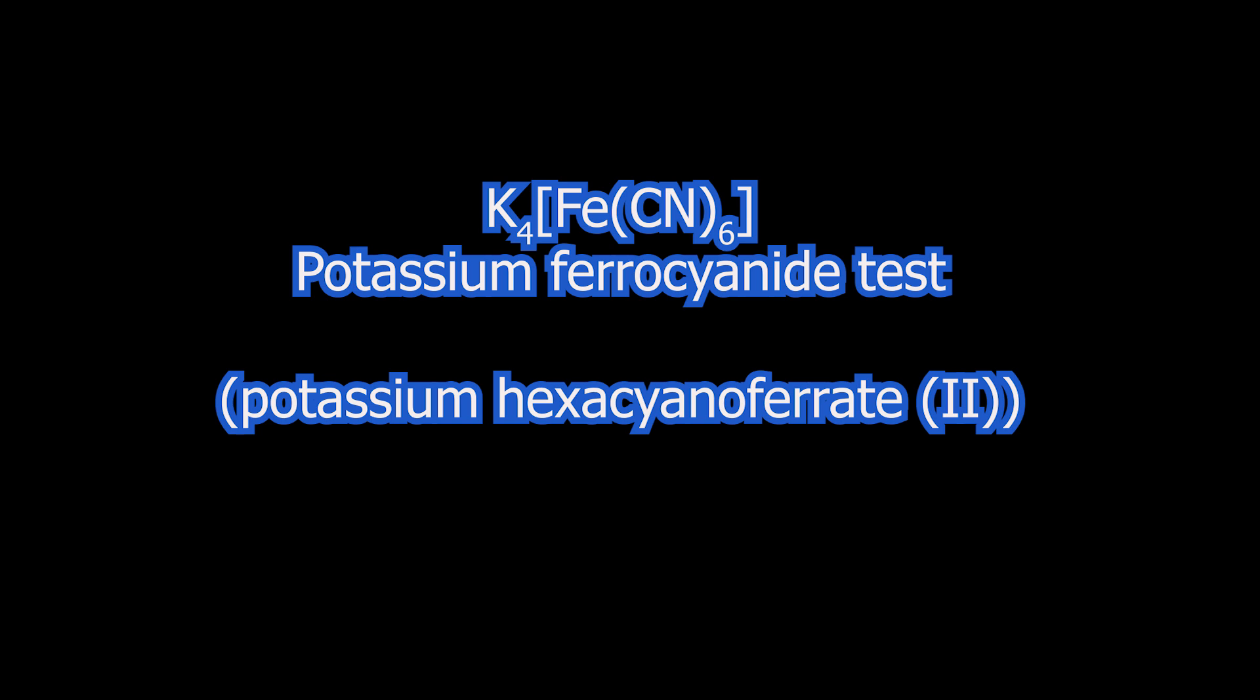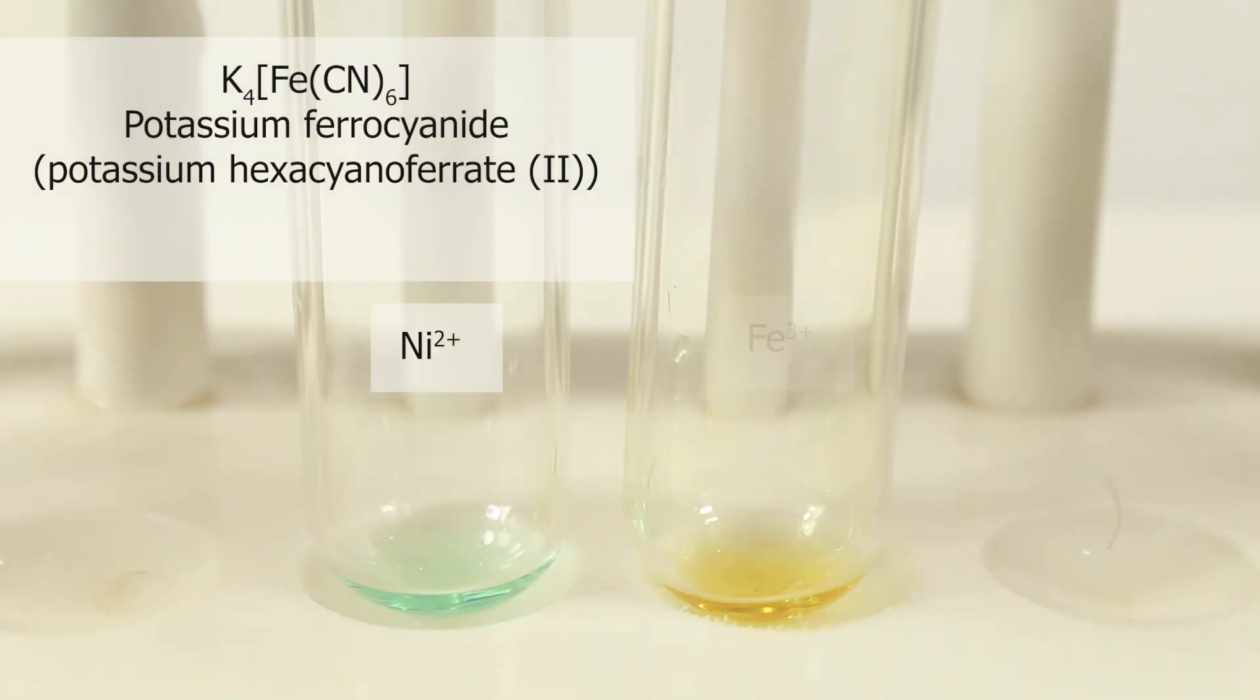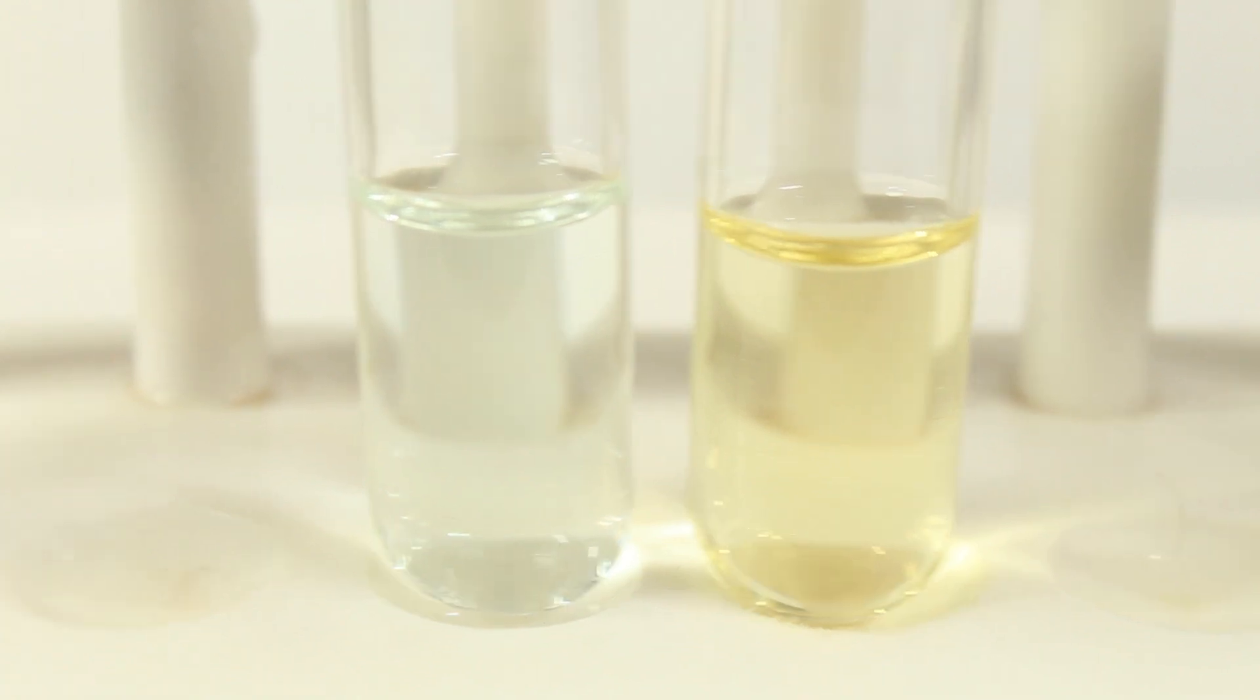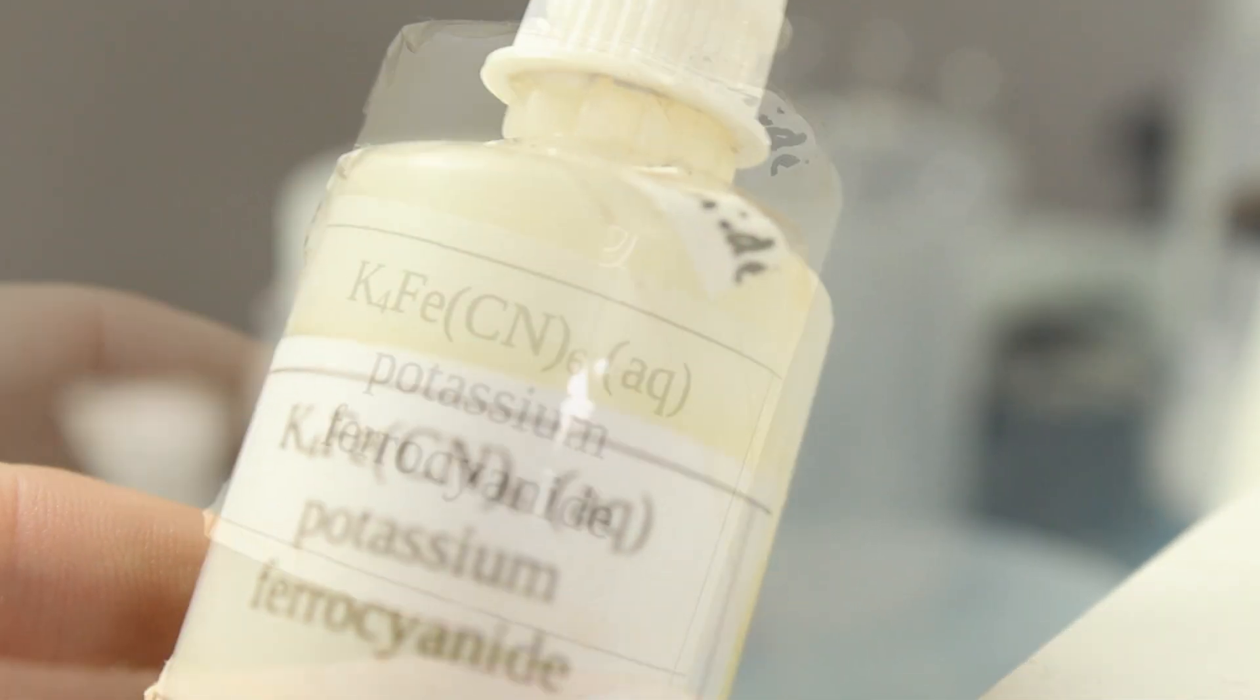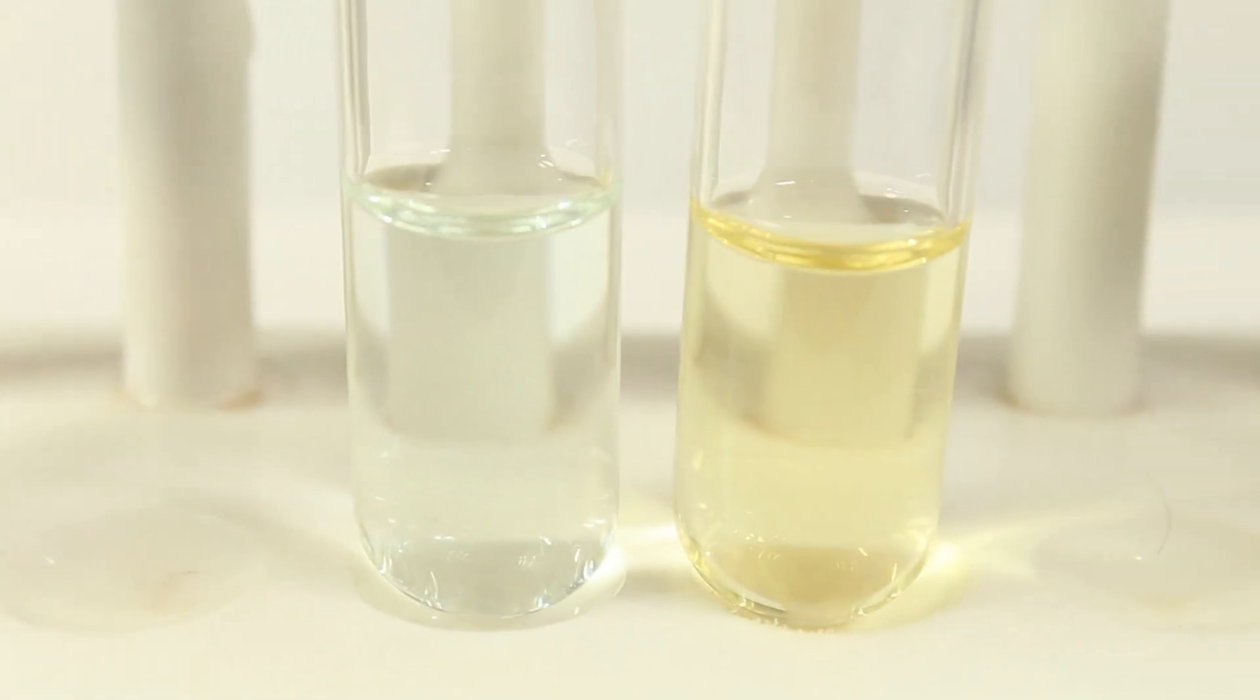Potassium ferrocyanide. Many tests of transition metal are based on the ability to form complexes with ligands. Ferrocyanide is one of ligands which form iron-3, iron-2 richly colored complex.